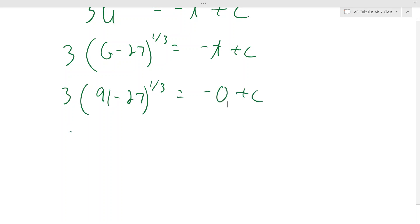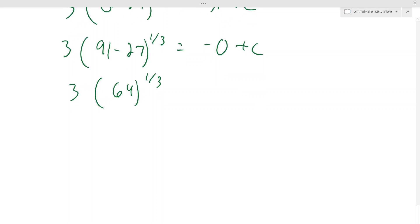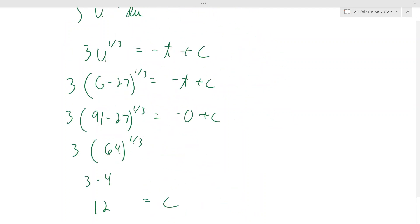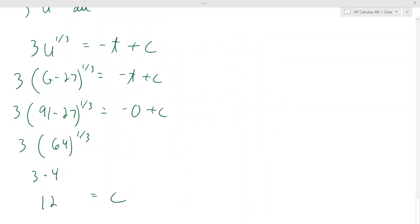Well, 91 minus 27 is 64 and 64 to the one third, that's the cubed root of 64. That's a four. So this side is really just three times four, which is 12. And that just equals C. So C at this point has to be 12, which means my equation is really three (G minus 27) to the one third equals negative t plus 12.